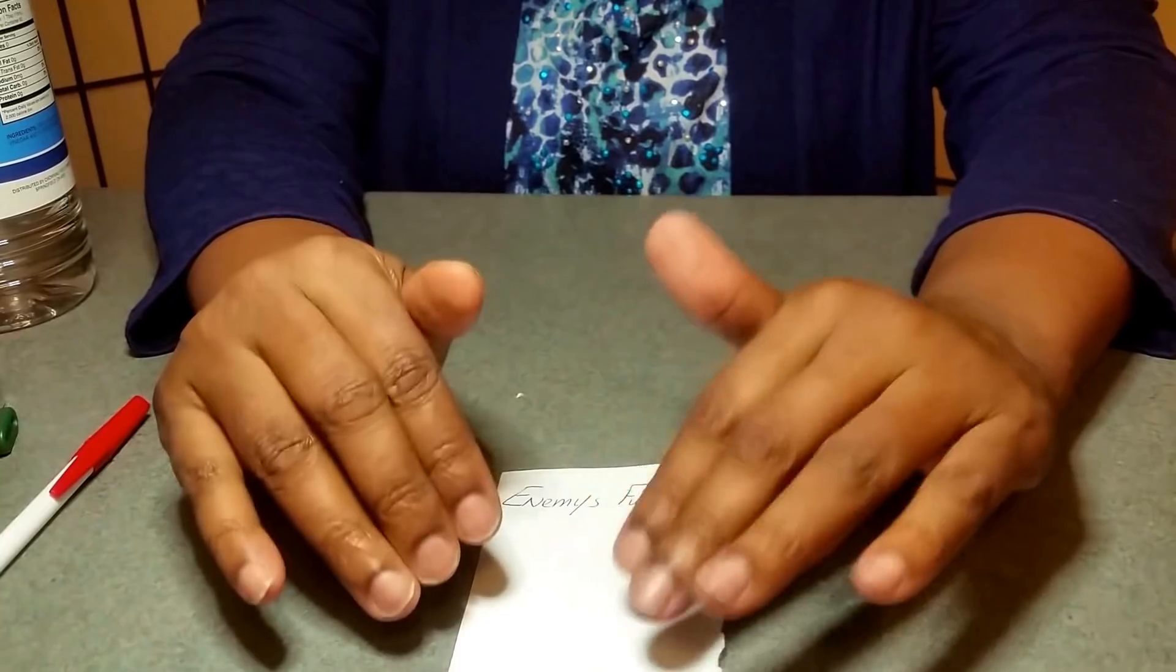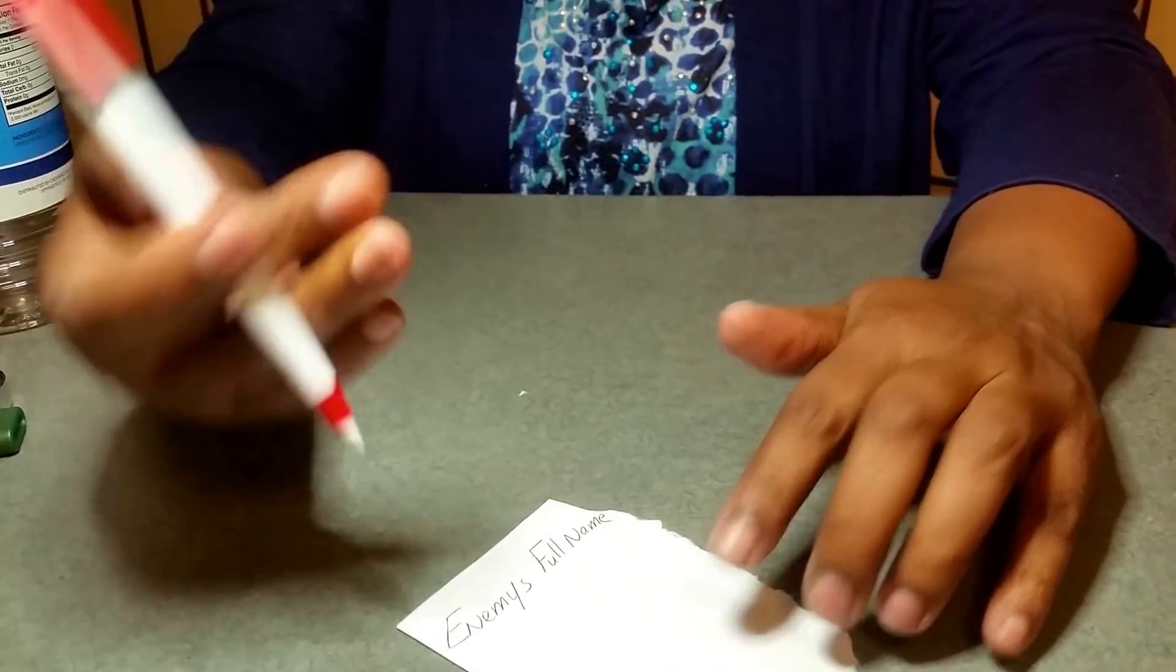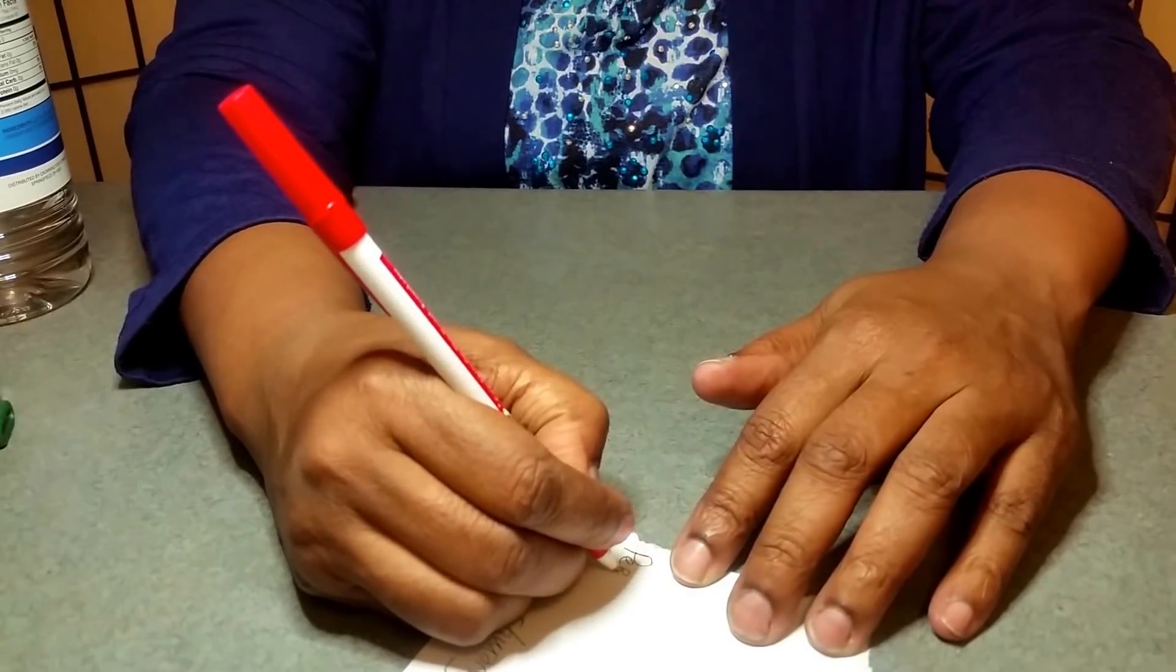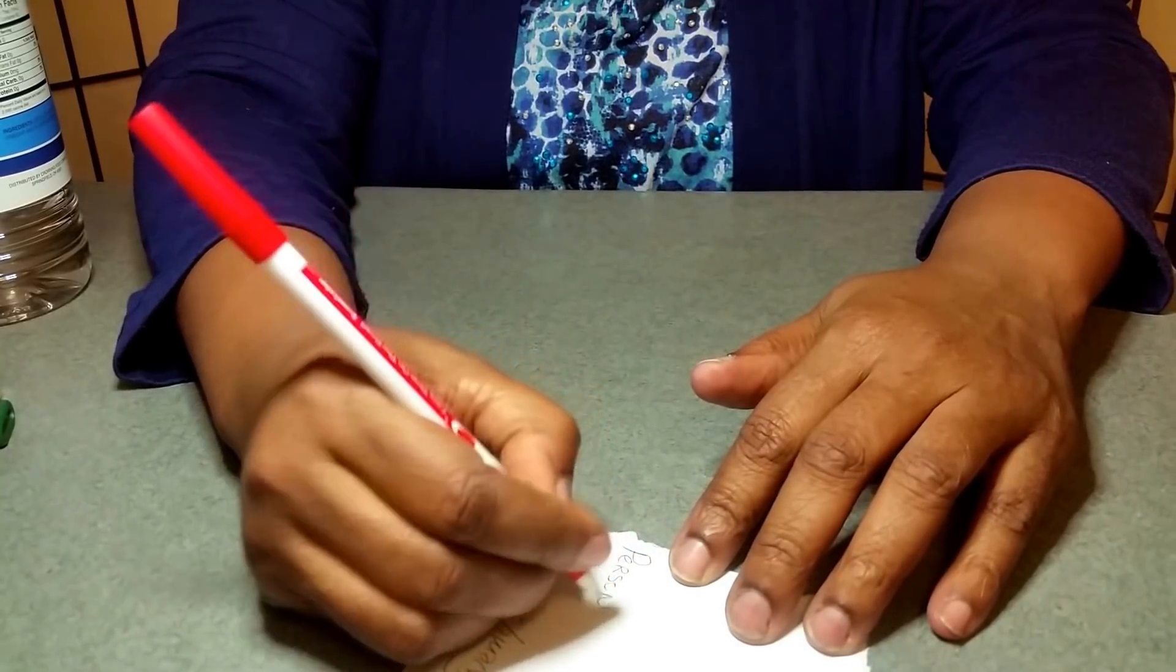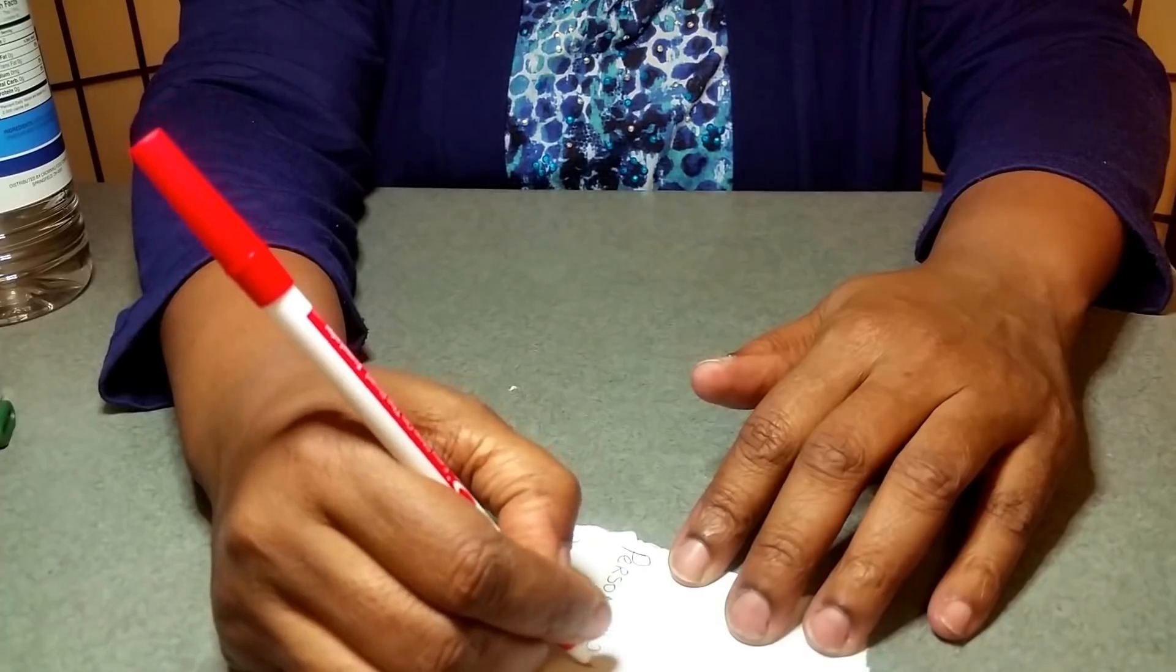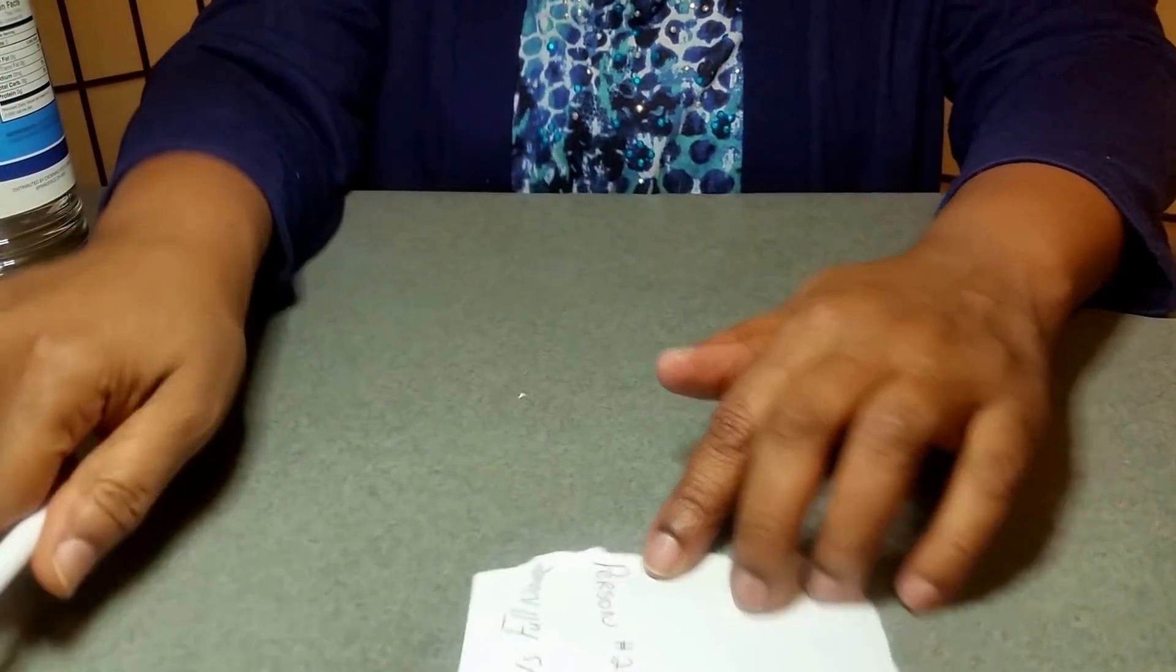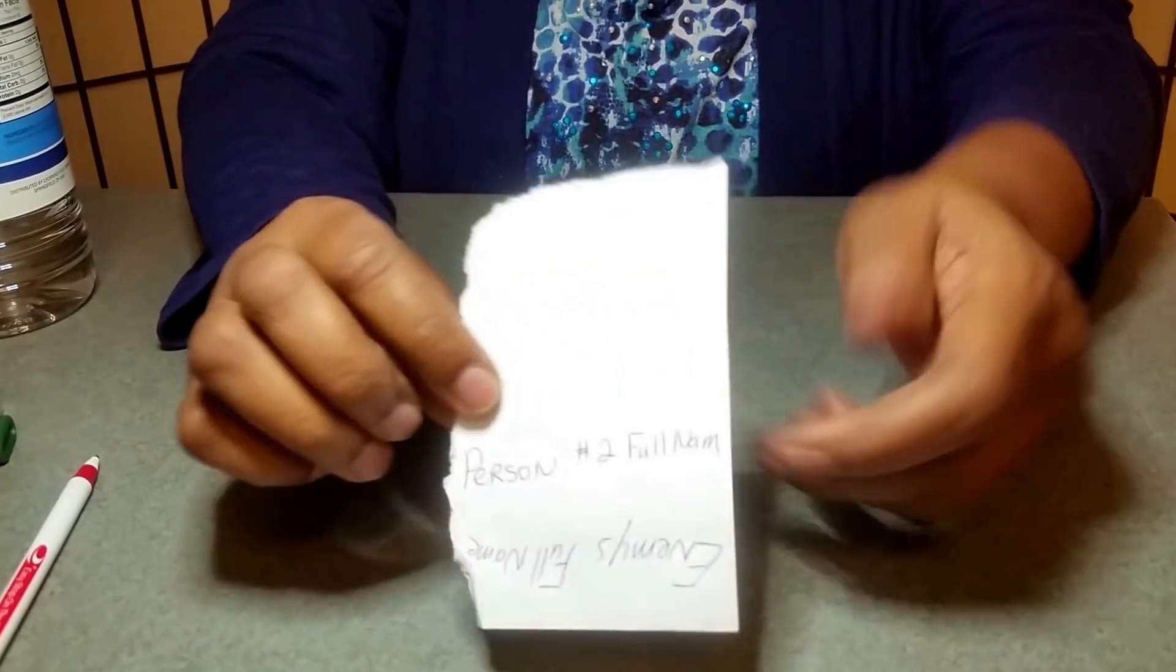But if you want to break up a couple using this spell with vinegar, you write the second person's name in full the opposite way of the way you did it the first time. So I'm writing down person number two full name. And the way you'll see it is one name is going one way, right? And then the other name is the flip of it going the other way.